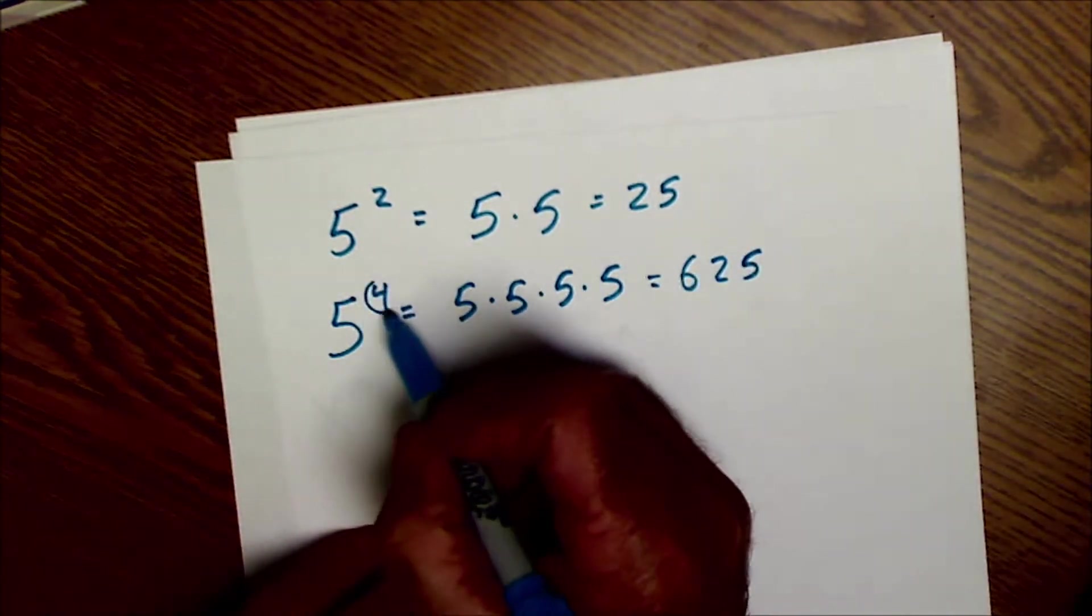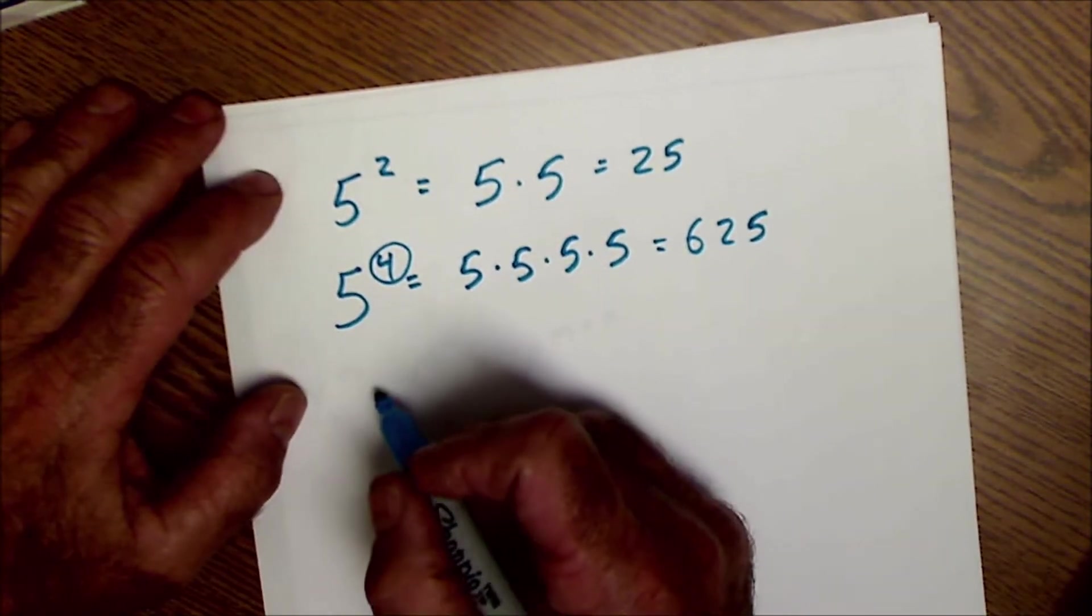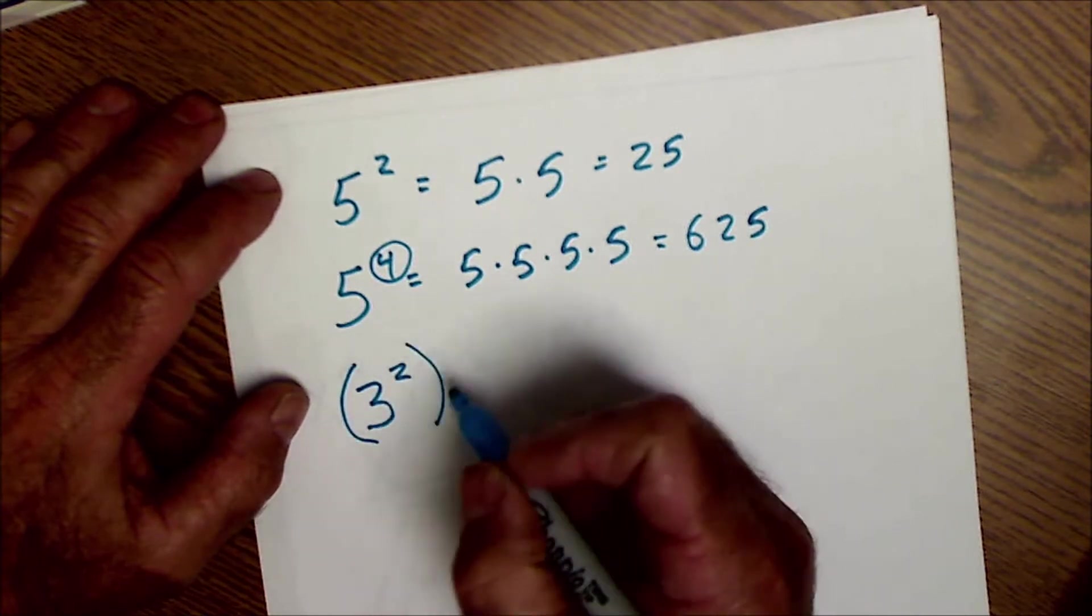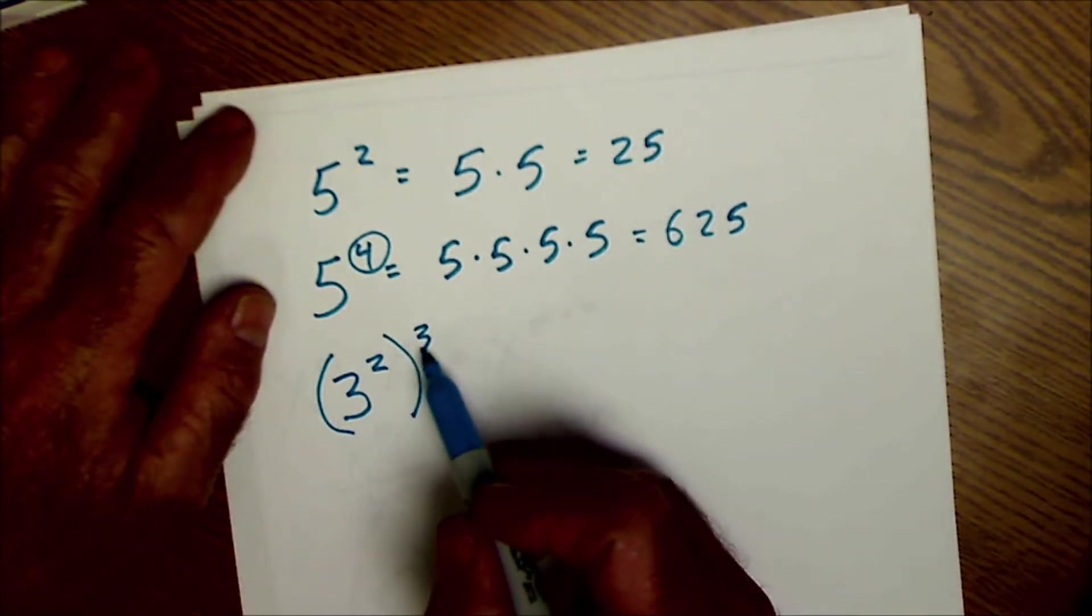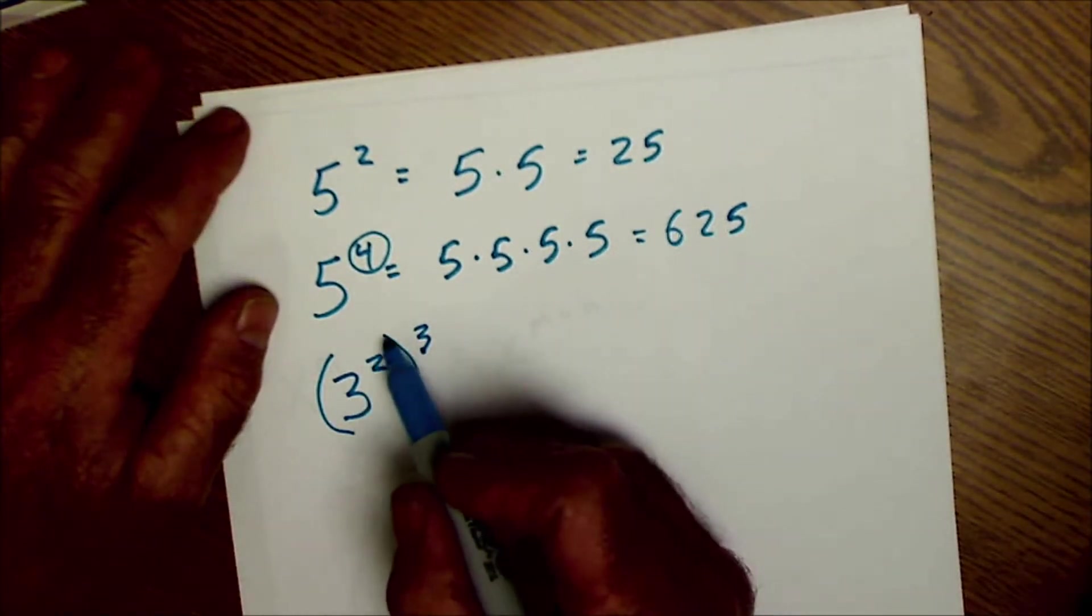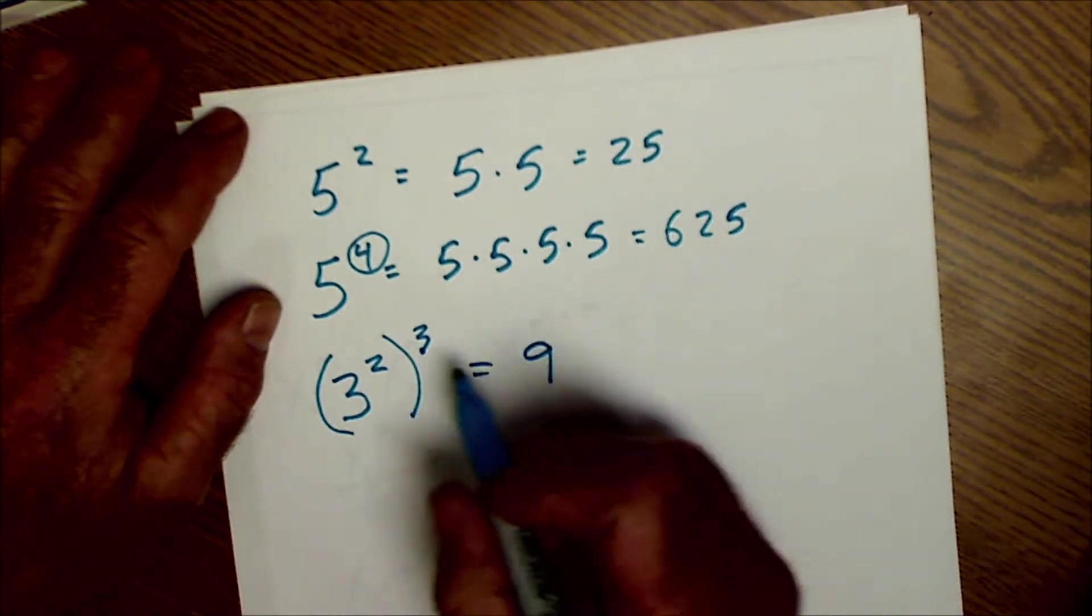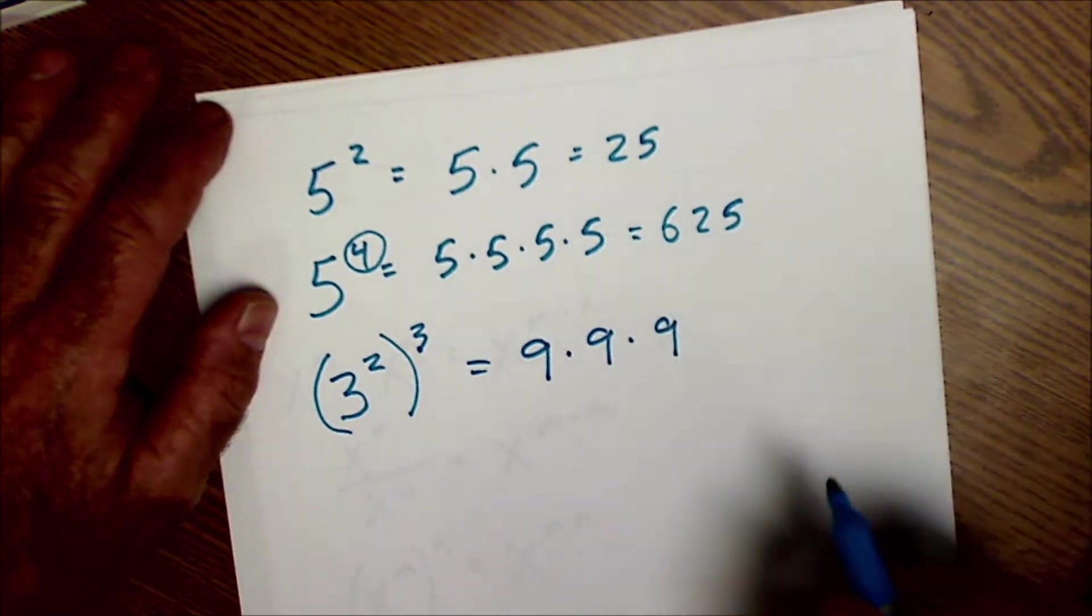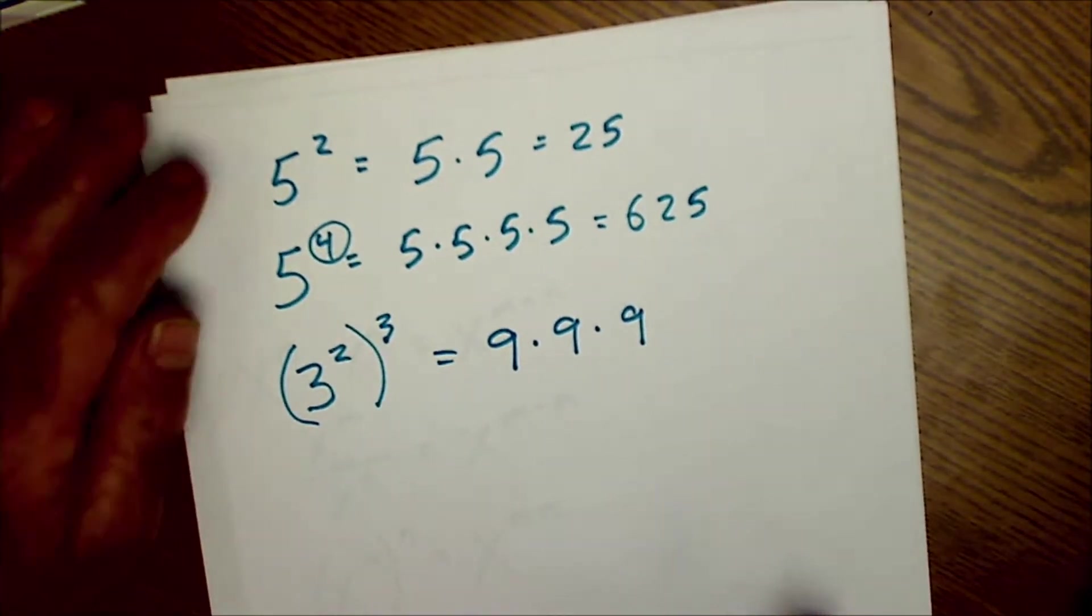So this is the number of times you multiply it, right? So if you had say 3 squared to the power of 3, the rule is you multiply these. But what this is saying is you take this thing right here, 3 squared, 9, but then I do that 3 times, so I'd have 9 times 9 times 9. So understanding what the exponent is is kind of the most important part.